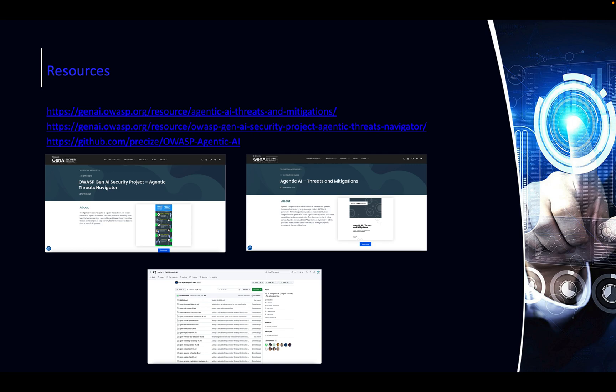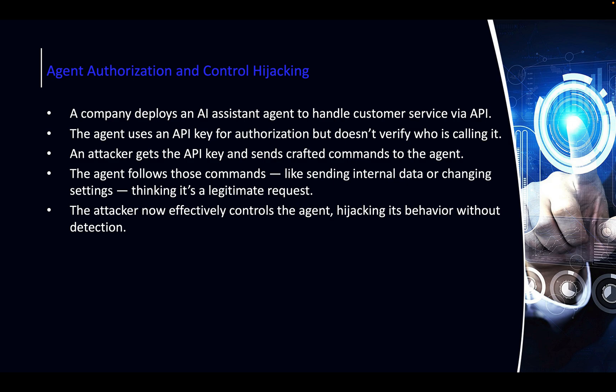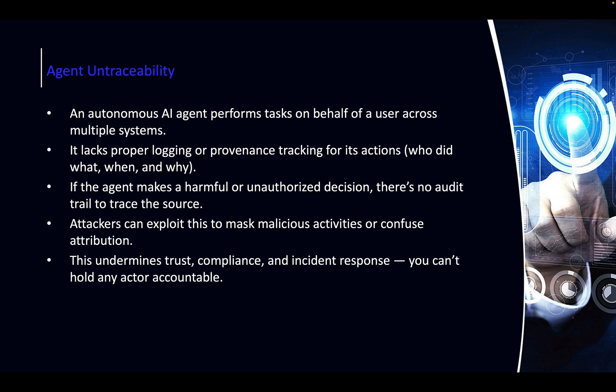Let's start with the first one: Agent Authorization and Control Hijacking. Think of a company deploying an AI assistant to handle customer service calls via an API. The agent uses an API key for authorization but doesn't verify who is calling it. If this API key gets stolen, an attacker could craft a request with that key with no verification it's coming from an authorized source. Relying simply on the API key itself in agentic AI is a problem — the caller should always be verified as well.